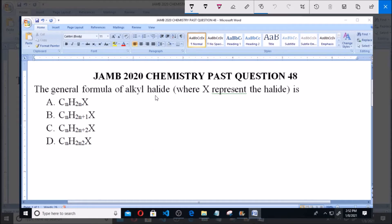And D. CnH2n2X. Now when you hear of the word alkyl halide, it simply means that we have a halogen attached to an alkyl group. In hydrocarbon or in organic chemistry, alkyl group is